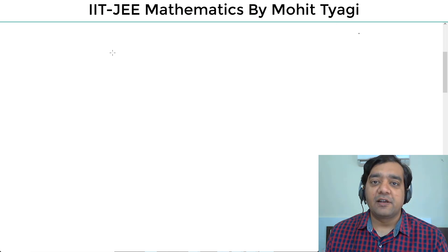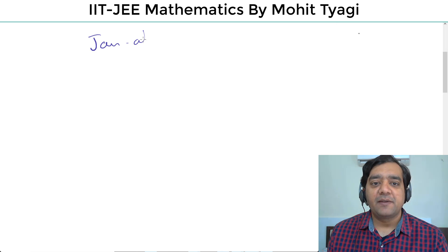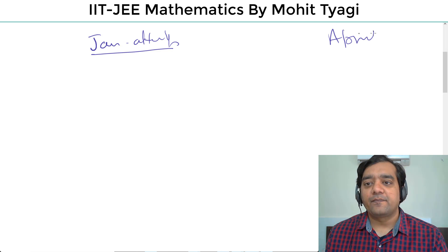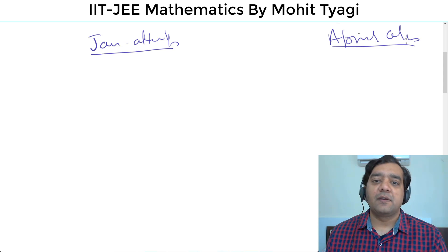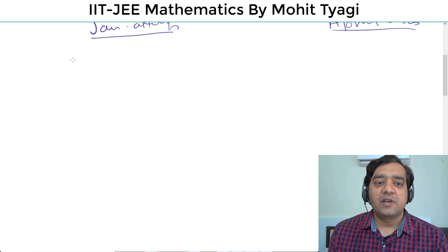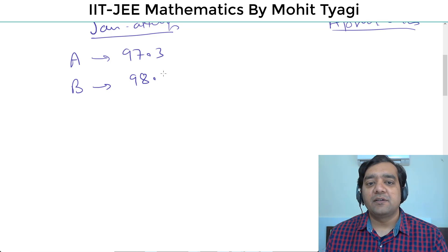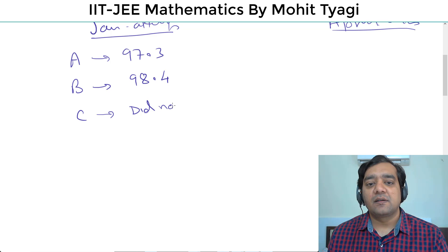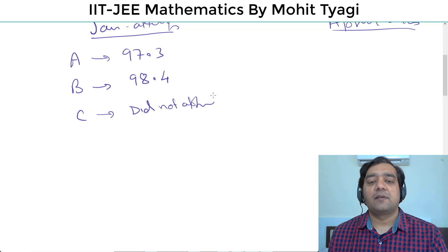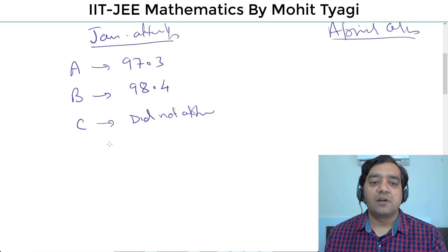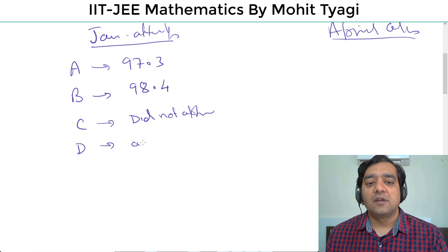Very quickly — this is a January attempt and this is an April attempt. Here is student A, his percentile is 97.3; student B, his percentile is 98.4; C did not appear; and D also did not appear.